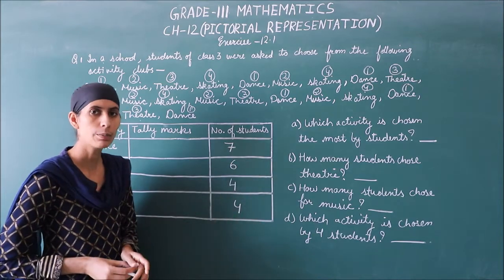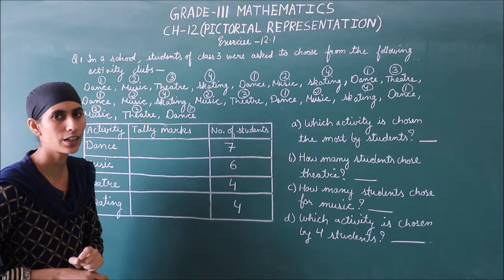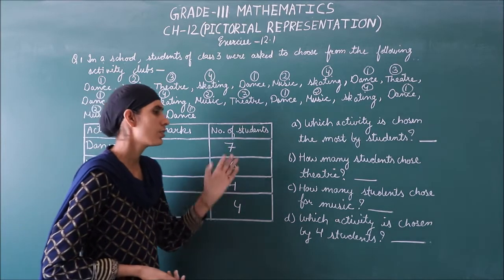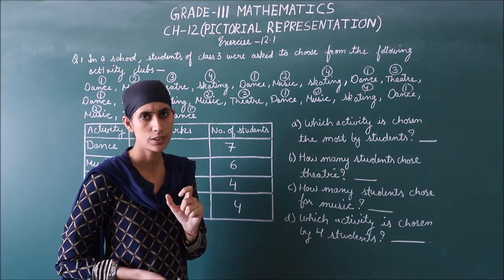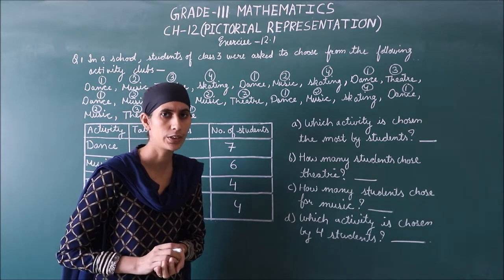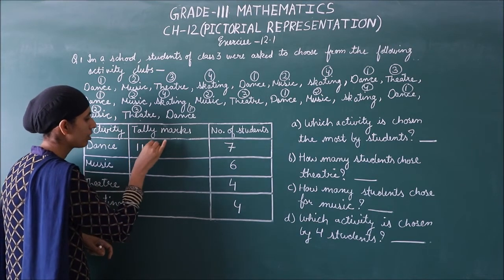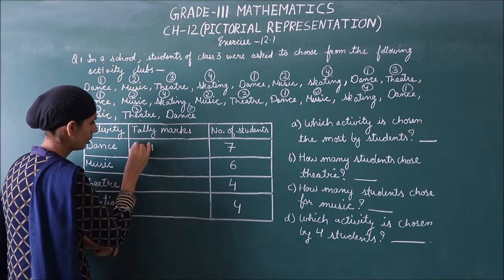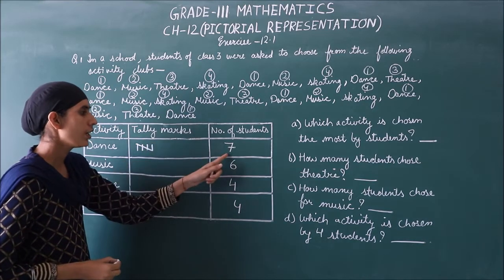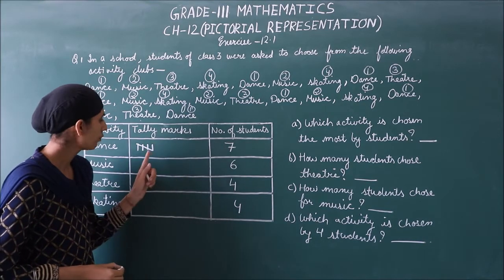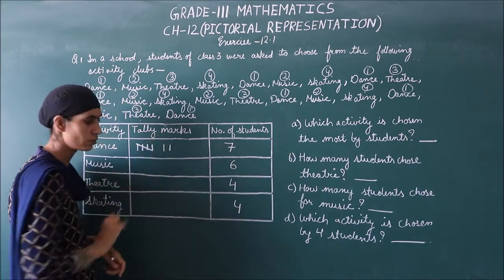We have filled in the data. Now we will represent it using tally marks. As I told you earlier, when our number is more than five we represent it in groups — we make groups of five. So for seven: one, two, three, four — then this makes a group of five with the cross line. Seven minus five leaves two remaining, so one, two more marks.